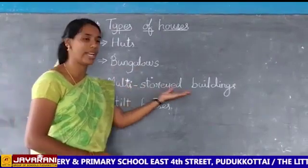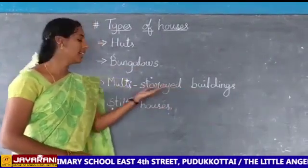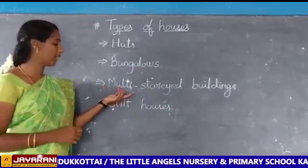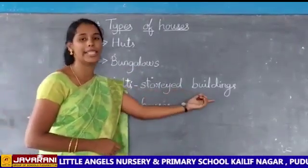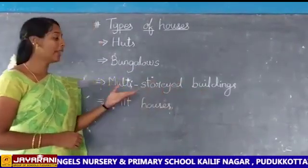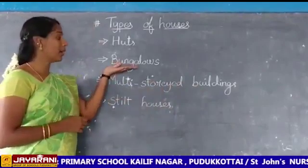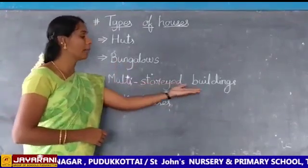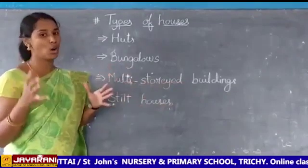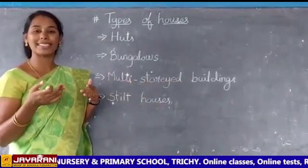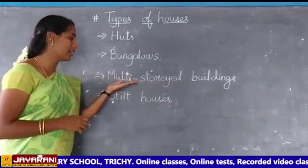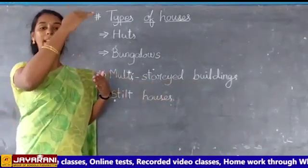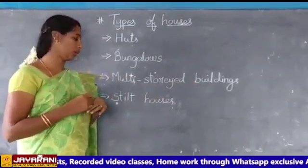Third, multi-storeyed buildings. These are mostly found in big cities. Multi-storeyed buildings have many houses in them. In bungalows there are many rooms, but multi-storeyed buildings have many houses — these are called flats or apartments.